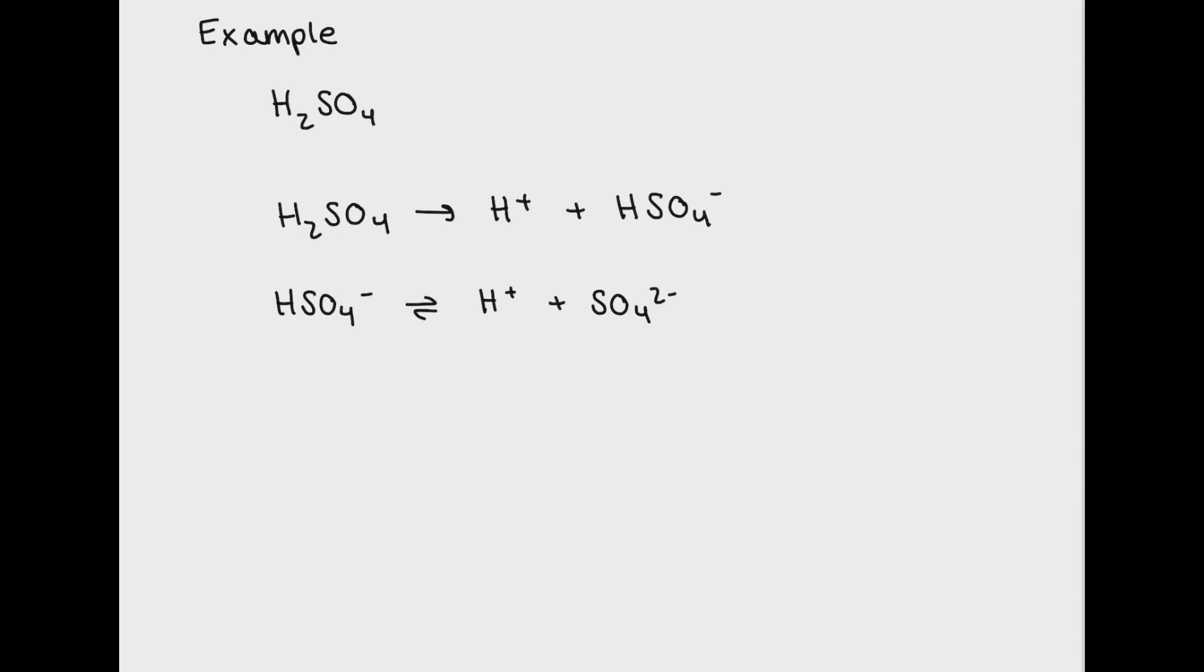As you can see, because polyprotic acids have multiple H pluses to give away, they dissociate multiple times. Because H2SO4 is a strong acid, the Ka value for the first dissociation is going to be very large because the products are highly favored. It's easy to pluck off the H plus from H2SO4.